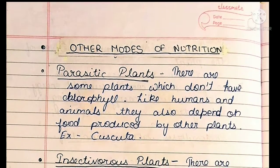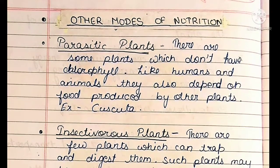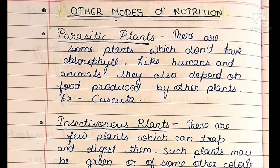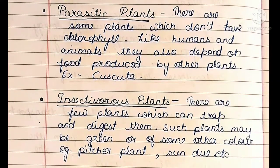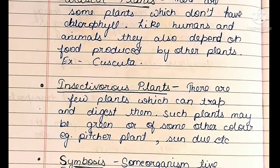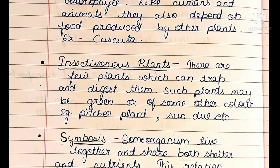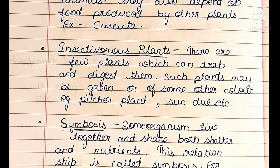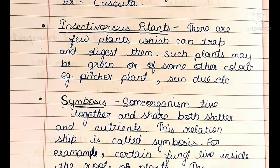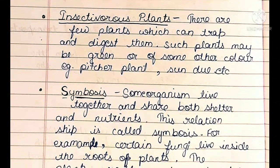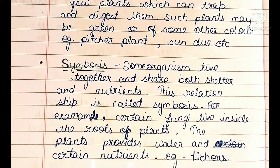Other modes of nutrition — Parasitic plants: There are some plants which don't have chlorophyll. Like humans and animals, they also depend on food produced by other plants. Insectivorous plants: There are few plants which can trap and digest insects; such plants may be green or some other color — for example, pitcher plant and sundew. Symbiosis: Some organisms live together and share both shelter and nutrients; their relationship is called symbiosis — for example, certain fungi live inside the roots of plants.